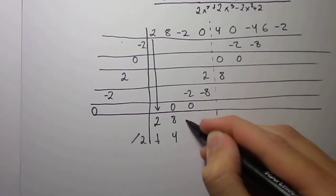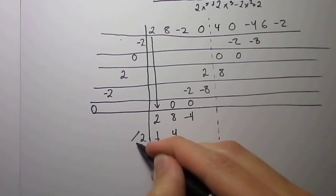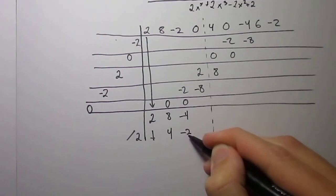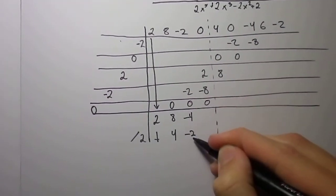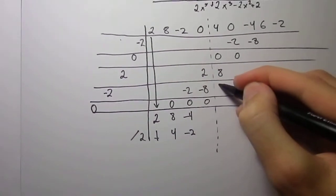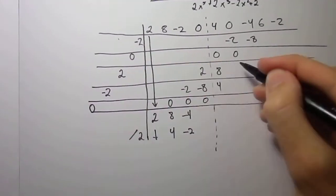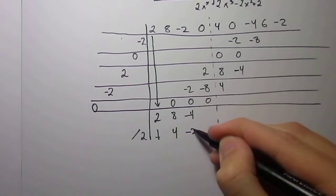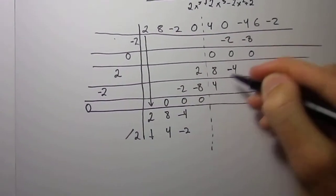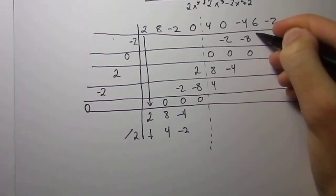Negative 2 plus negative 2 is negative 4. Divide by 2 is a negative 2. Negative 2 times 0 is 0. Negative 2 times itself, Negative 2 is a positive 4. Negative 2 times 2 is a negative 4. Negative 2 times 0 is a 0. And negative 2 times negative 2 is a positive 4.